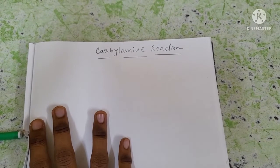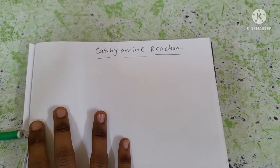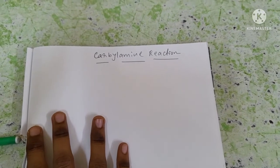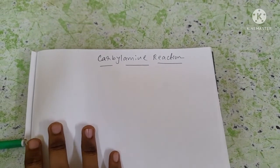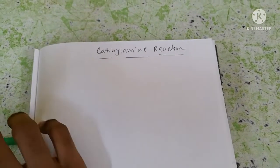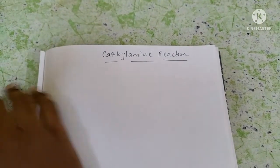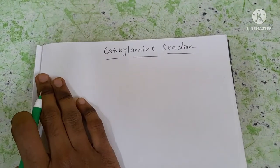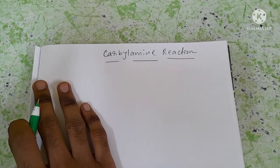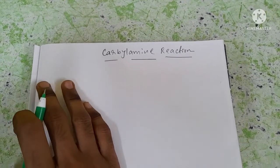The product is isocyanide. The mechanism is very difficult, so I cannot show the mechanism in this video. I will only write the reaction through which primary amine, secondary amine, and tertiary amine can be distinguished.